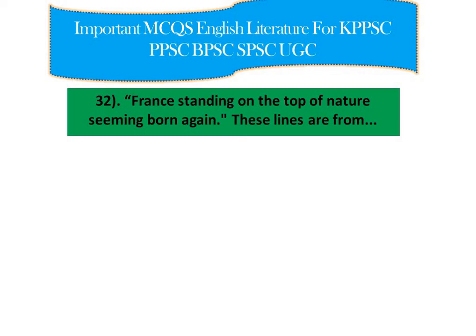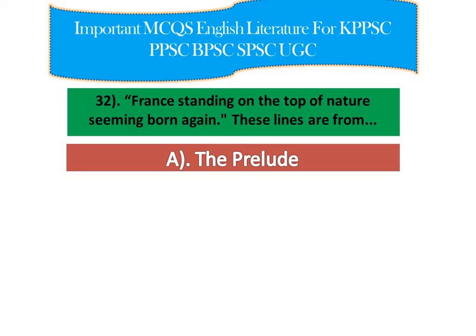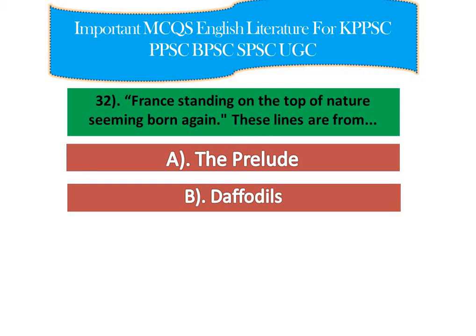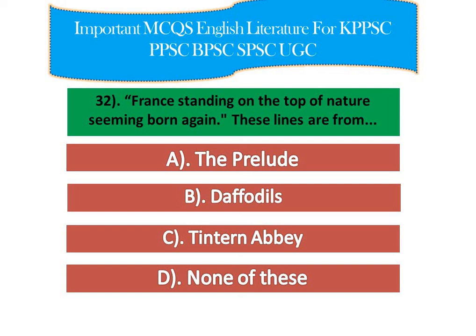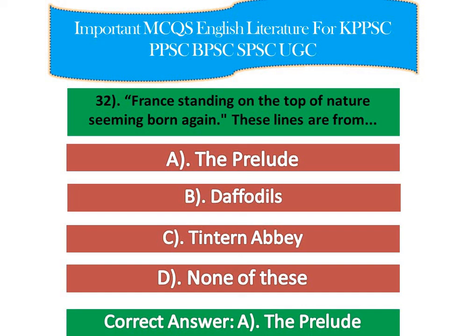Question number 7: 'France standing on the top of nature, seeming born again' — these lines are from: option A: 'The Prelude', option B: 'The Fidelio', option C: 'Tantrum', option D: none of these. The right option is A — 'The Prelude'. 'The Prelude' relates Wordsworth's love of nature and beauty and its importance in his life. It is an autobiographical poem written by Wordsworth.